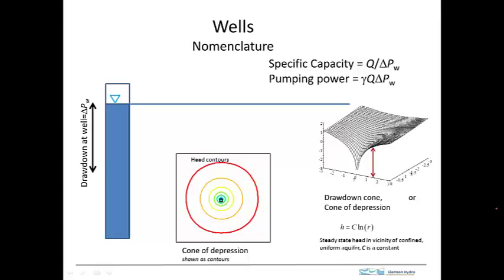To get started looking at wells, let's take a look at some basic processes and nomenclature. This is a well in cross-section, tapping into an aquifer under static conditions. We see the water level in the well and the water level out in the aquifer are at the same level, so there's no flow in this situation.